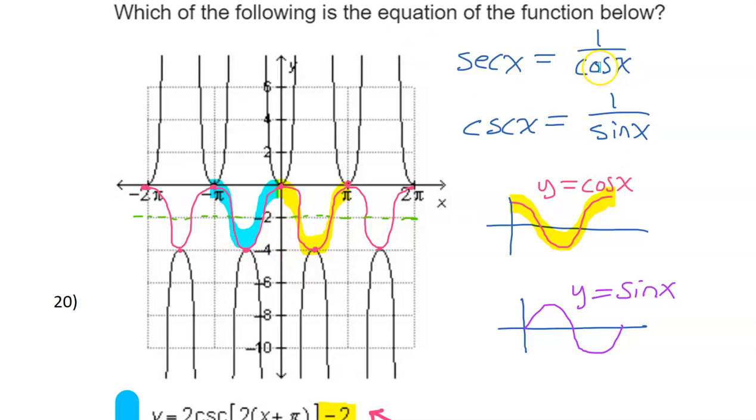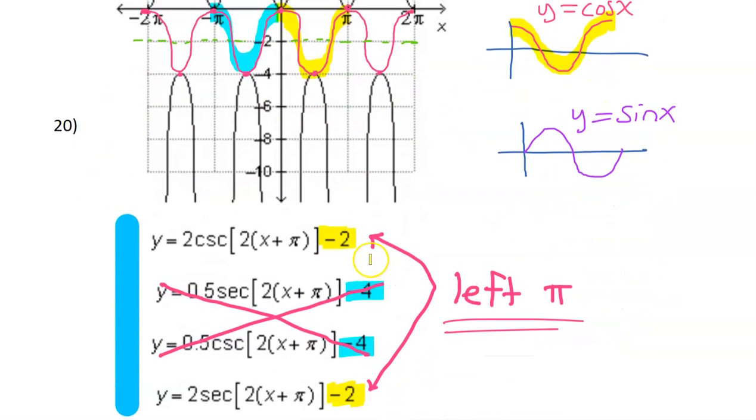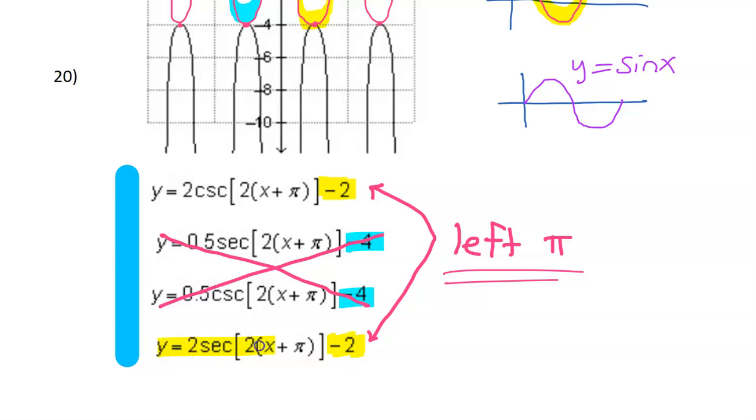So I'm betting that this is a cosine function. And remember that if it's a cosine function, then that makes it a secant function. The actual graph is a secant function. So I'm betting that this one down here at the bottom is going to be the answer.